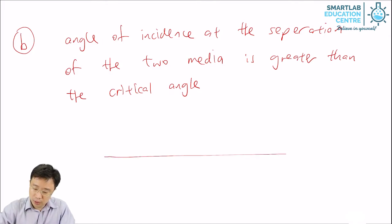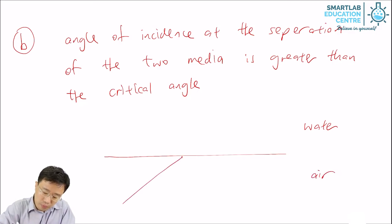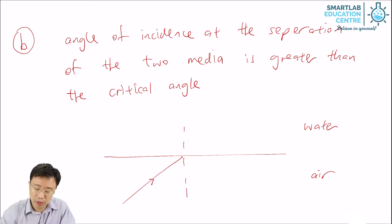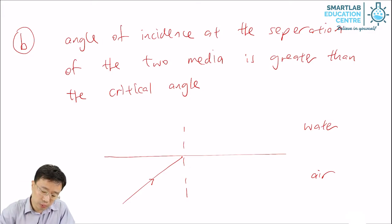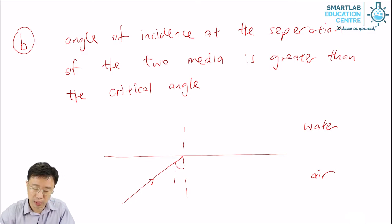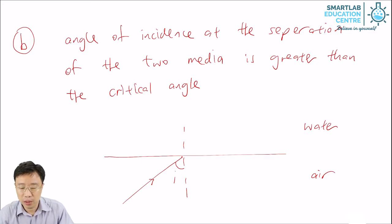For example, consider light traveling from water to air. This is an incident ray because the arrow shows that it is traveling towards the separation between the two media. The angle between the normal and the incident ray is the angle of incidence we are talking about. Depending on the size of this angle, total internal reflection may or may not happen.